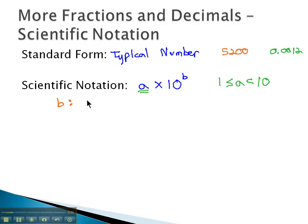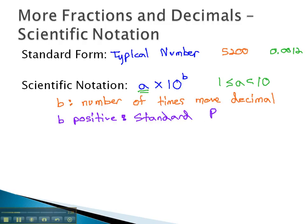The b, then, is also important. b tells you the number of times we need to move the decimal. If b is a 7, the decimal point has been moved 7 times as we converted between standard notation and scientific notation. We also look at the sign on b, because if b is positive, it tells us that the standard number is a big number, or bigger than 10. 5200 is bigger than 10. That would have a positive exponent on the 10. Conversely, if b is negative, it means the standard notation number is small, or smaller than 1, like 0.0012 would have a negative exponent on b.